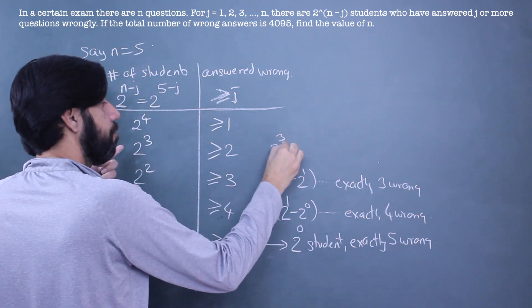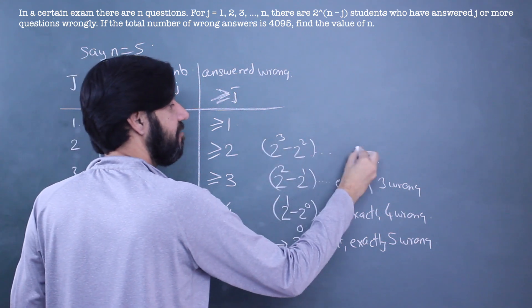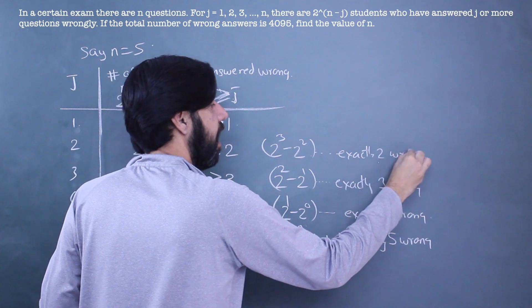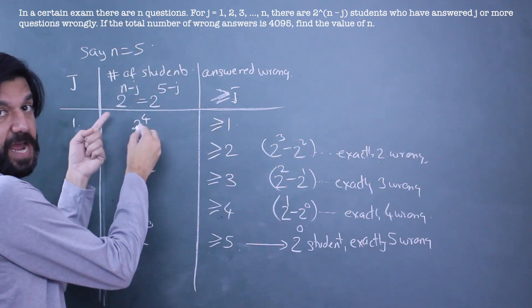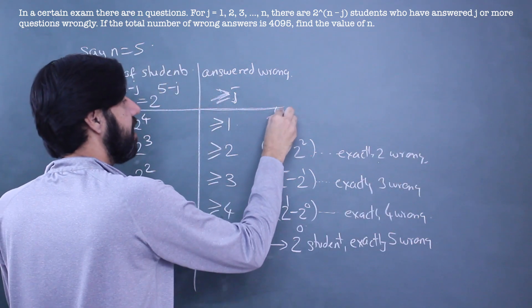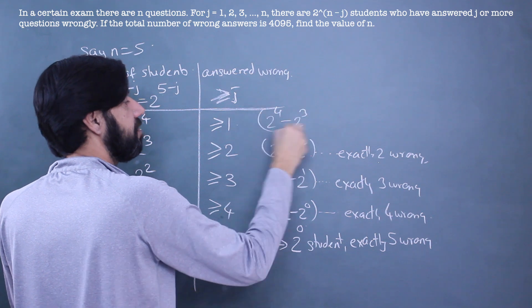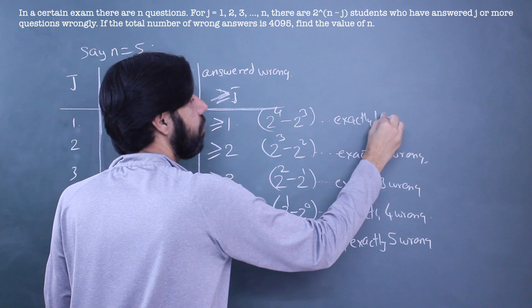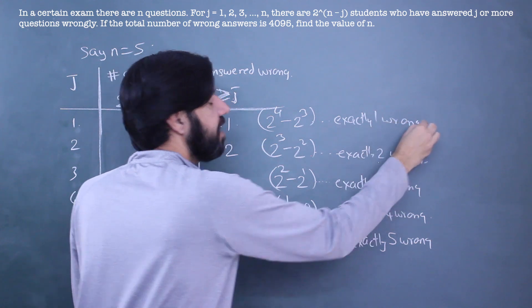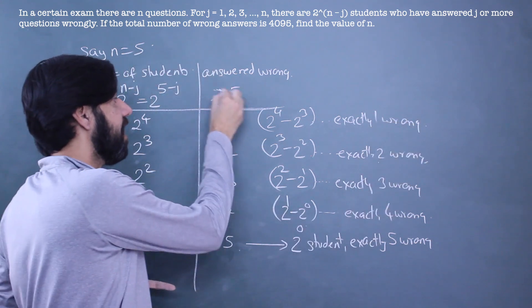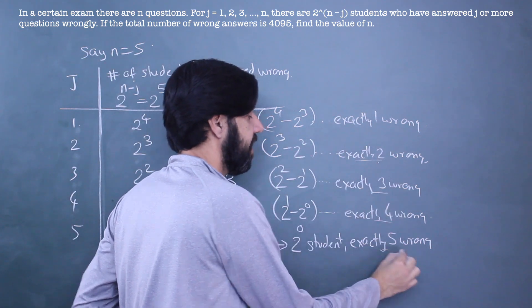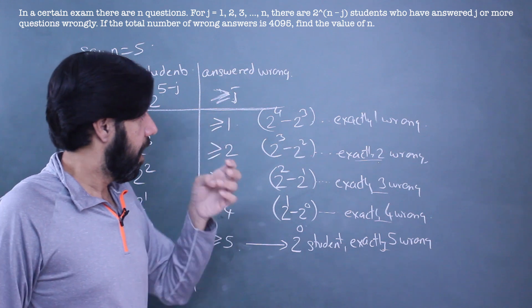These are 2^3 - 2^2, these many students have answered exactly 2 wrong. And subtracting here will give me 2^4 - 2^3, these many students have answered exactly 1 question wrong. So what we've just done is we have changed a greater than or equal to j wrongs into exactly 1 wrong, exactly 2, exactly 3, exactly 5.